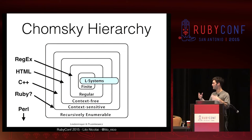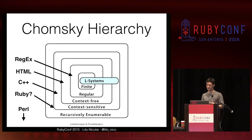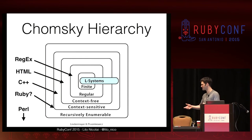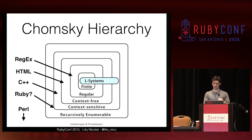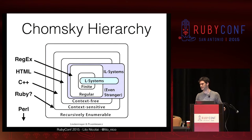So L-systems are a weird slice of a bunch of these layers. You can match with an L-system — with the rules I've been talking about — some finite grammars, some regular grammars, some context-free and some context-sensitive grammars, but not all of them. I'm going to make that concrete in just a second. There are also context-sensitive L-systems, which are even stranger and beyond the scope of this talk.